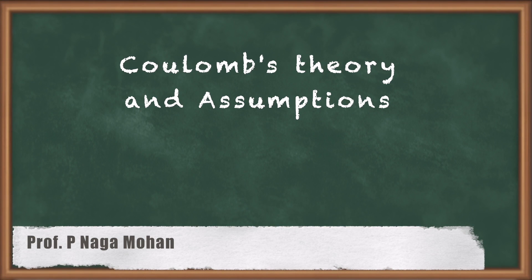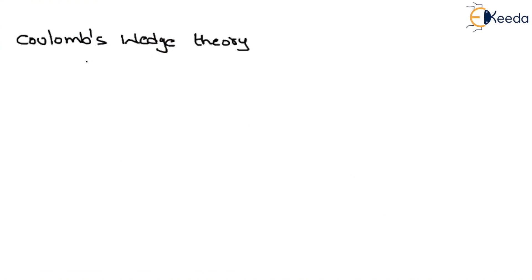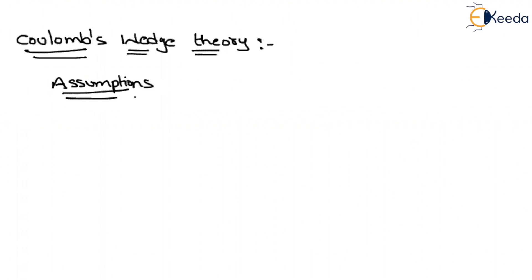In this video we will see the assumptions of Coulomb's wedge theory. Similar to Rankine's theory, by using Coulomb's wedge theory we can find out the earth pressures in a retained mass. Assumptions are very very important. Just like in Rankine's, Coulomb also assumed that the soil is homogeneous and isotropic.